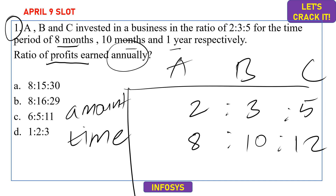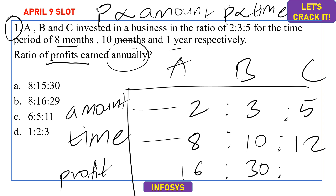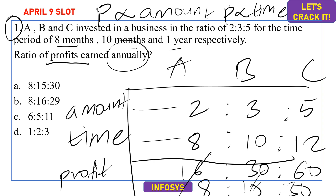Profit is directly proportional to both the amount invested and the time invested, so profit is proportional to the product of amount and time. Calculating: 2×8 = 16, 3×10 = 30, 5×12 = 60. Simplifying 16:30:60 gives 8:15:30. Option A is the correct answer.